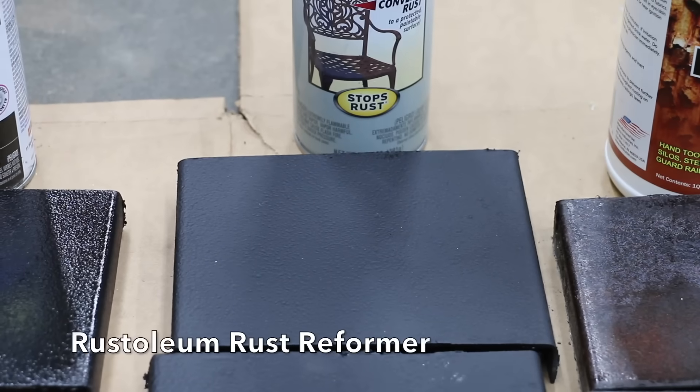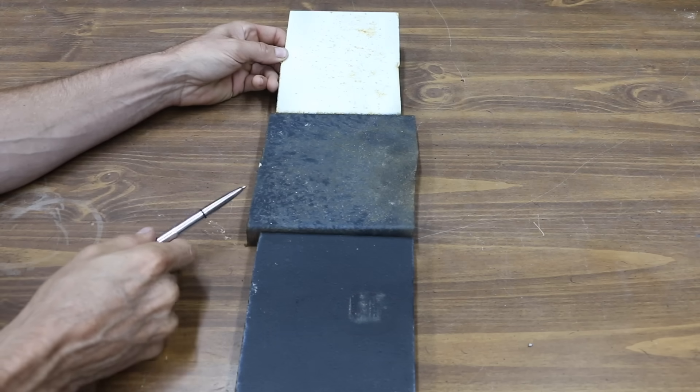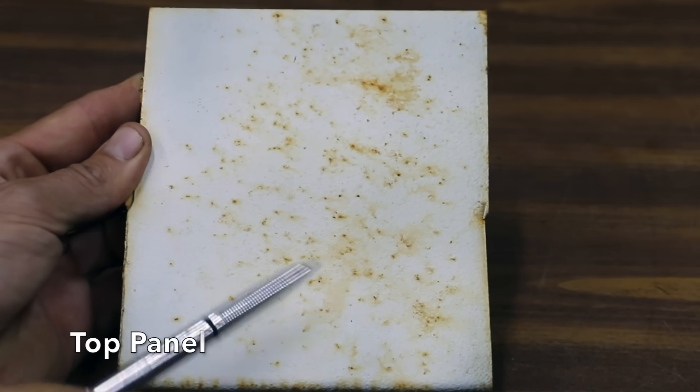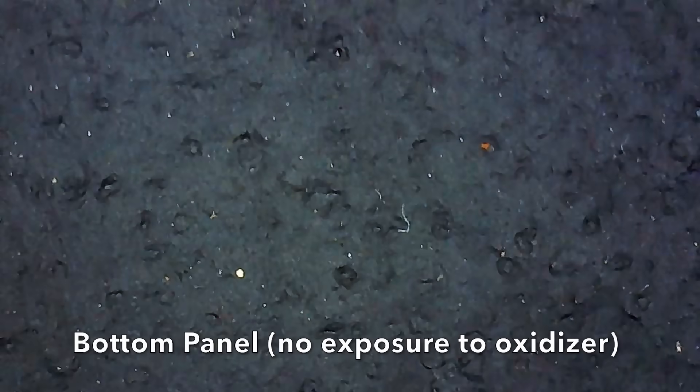Rust-Oleum Rust Reformer has a very flat appearance. The Rust Reformer, as well as the Rust-Oleum 2X, nearly finished in a tie. The Rust-Oleum 2X definitely seems to have finished just behind the Rust Reformer, though, when you look at the amount of rust. The rust is definitely popping through on the top two panels. However, the bottom panel actually looks really good.